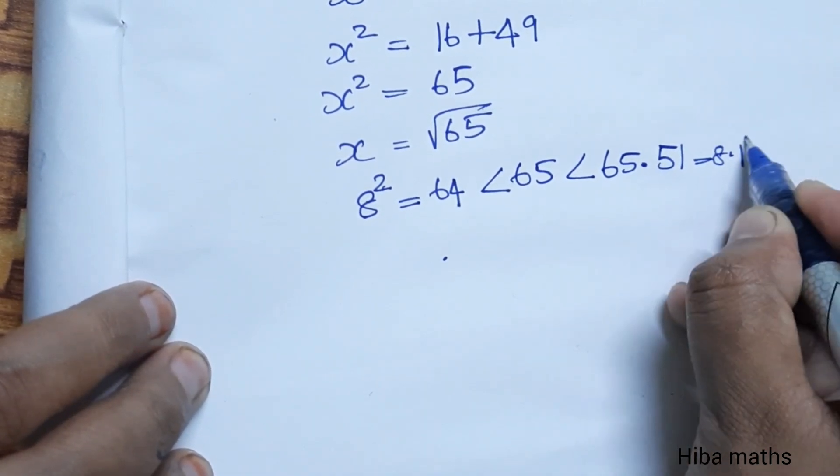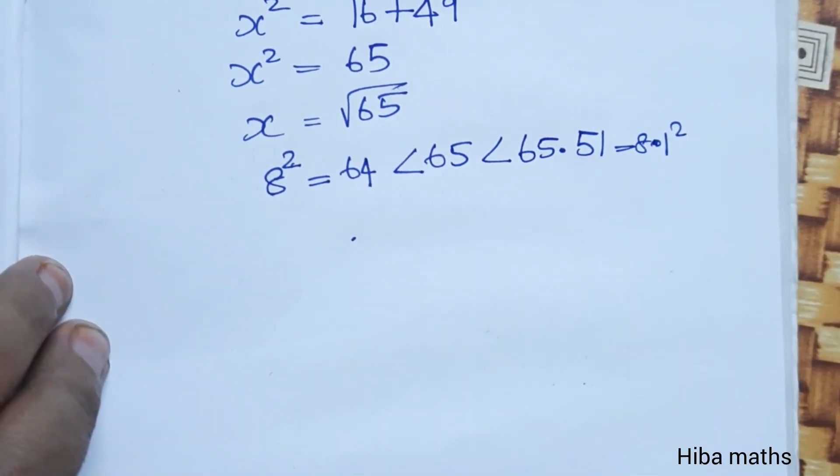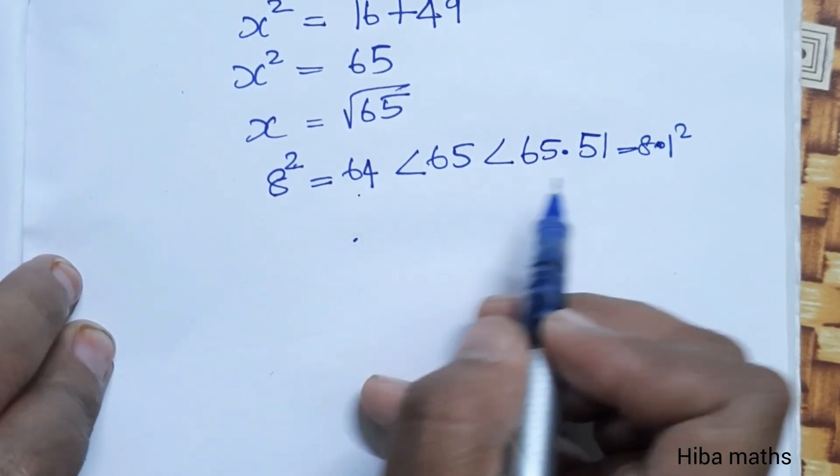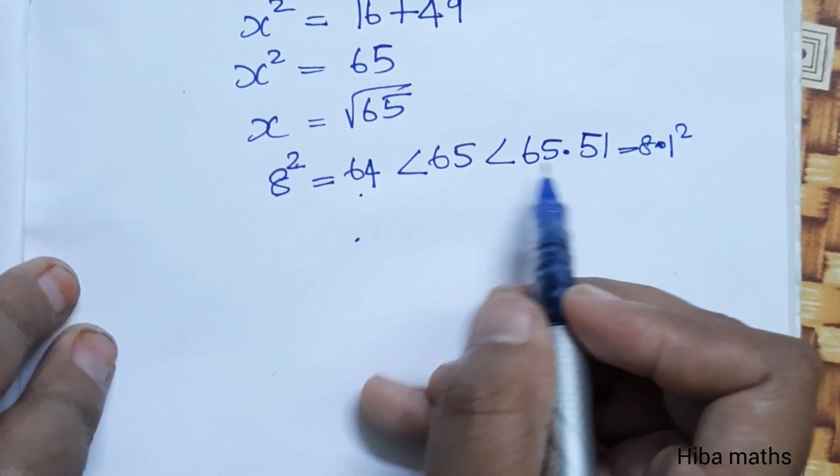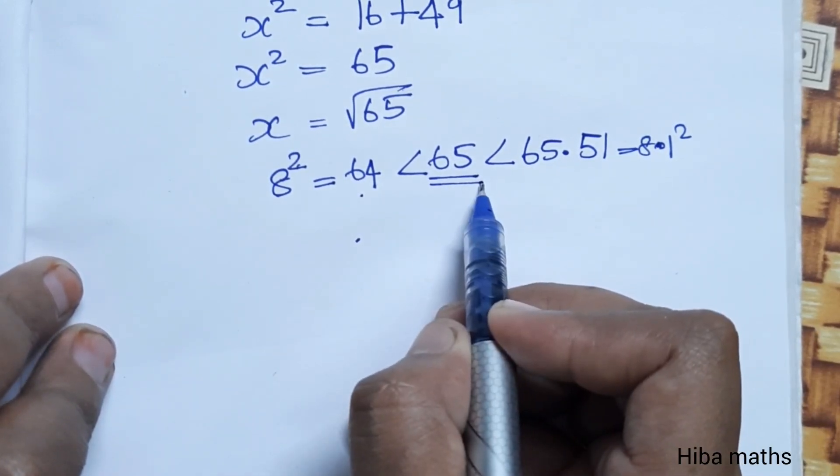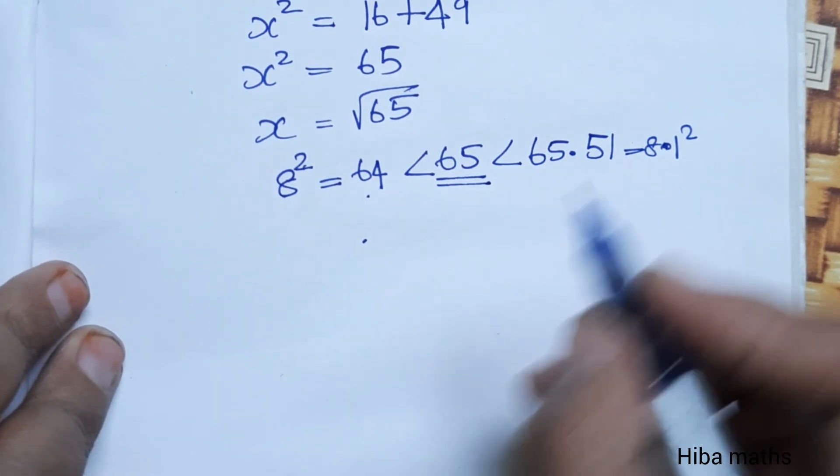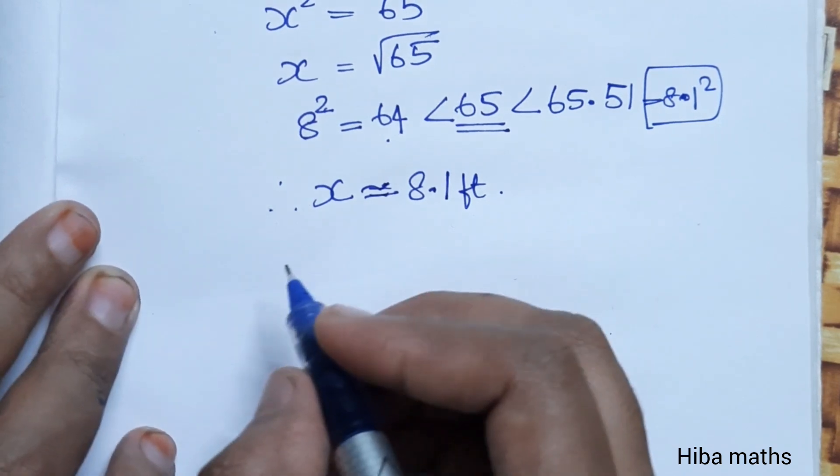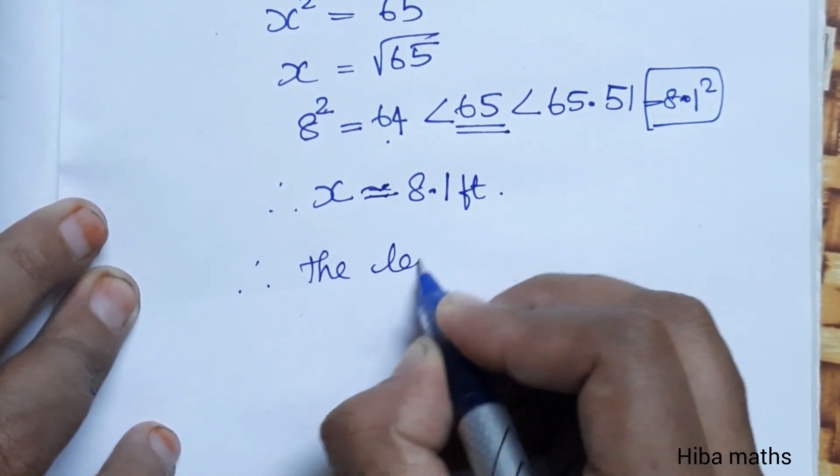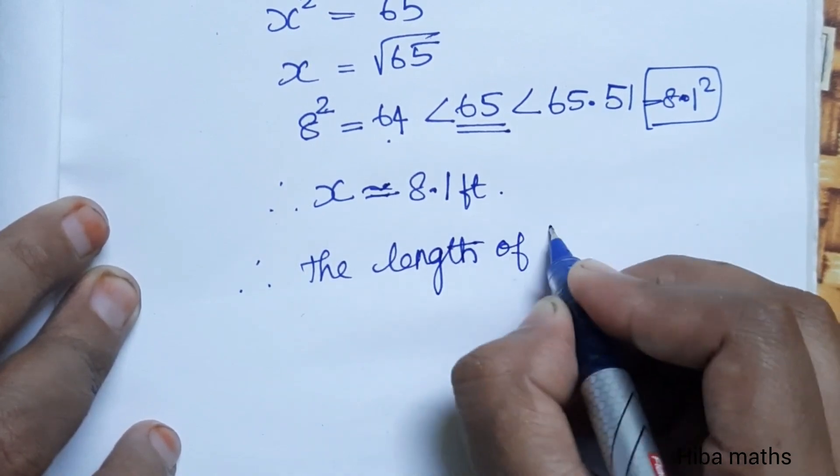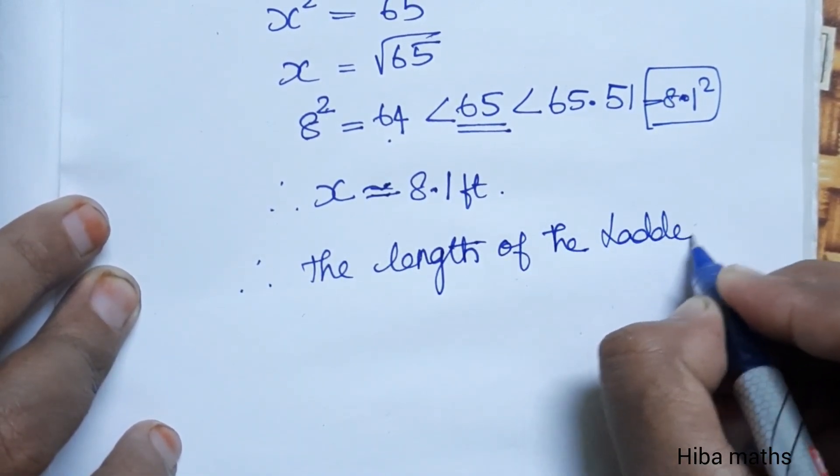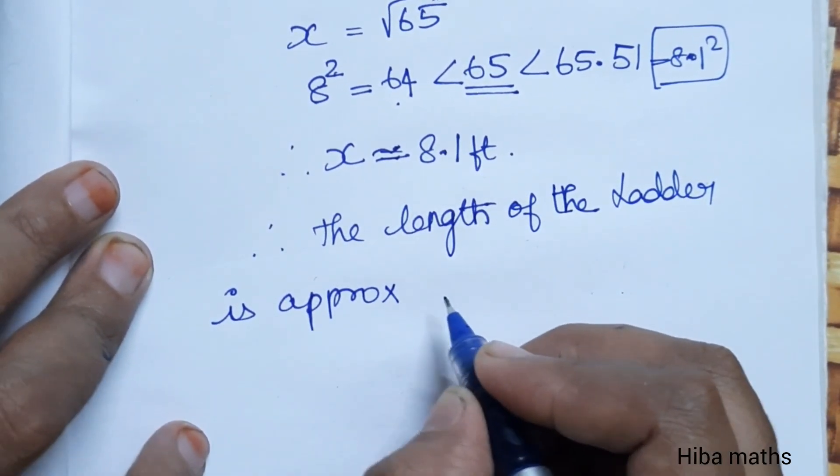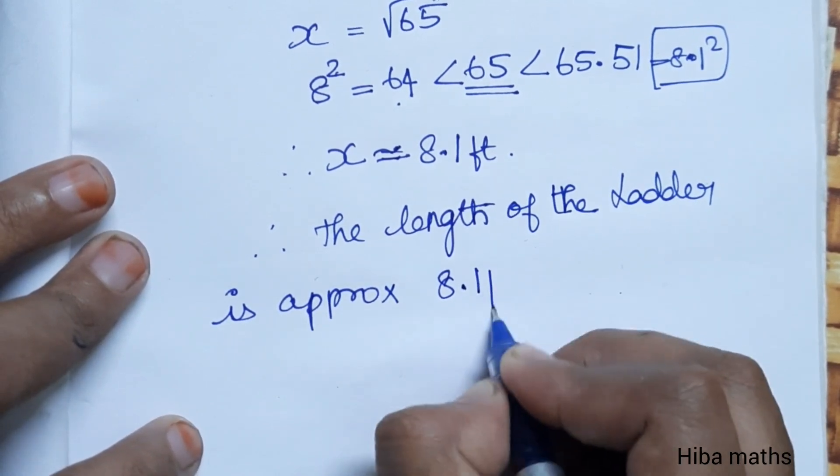To be more precise, x equals the square root of 65, which is approximately 8.1 feet. That is the ladder height. Therefore, the length of the ladder is approximately 8.1 feet.